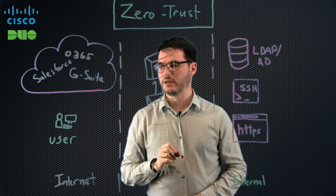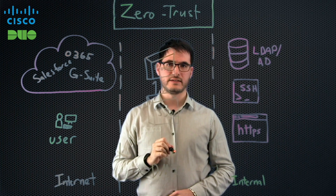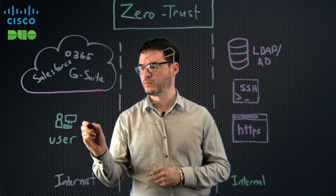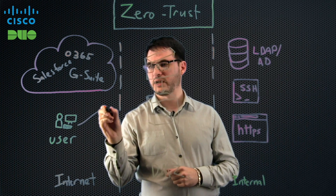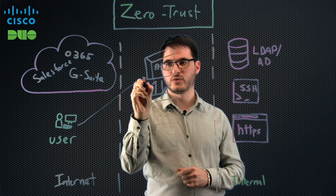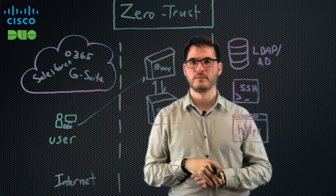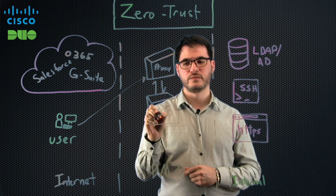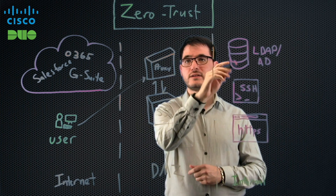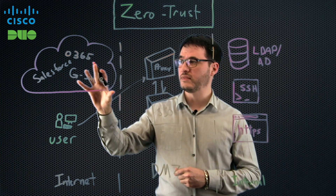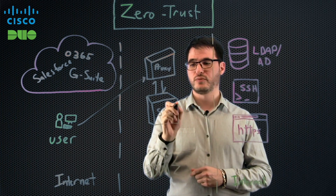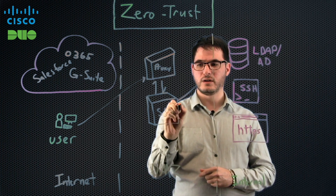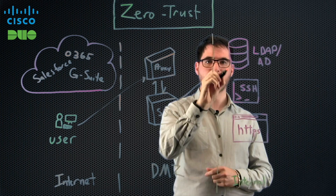So now what's going to happen is our user wants to access something on-premise, just like they did before with the VPN. What they're actually going to connect to via their client or their browser is the reverse proxy. The reverse proxy is going to send them to the single sign-on gateway. The single sign-on gateway is going to talk to some source of identity — that might be in the cloud or on-premise. In this case, we'll say it's on-premise, so it's going to talk to our directory on-premise to authenticate that user.